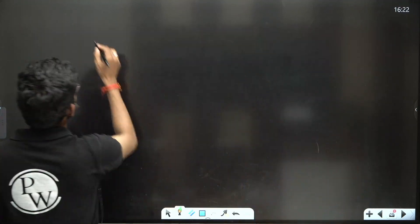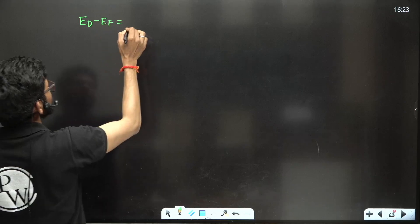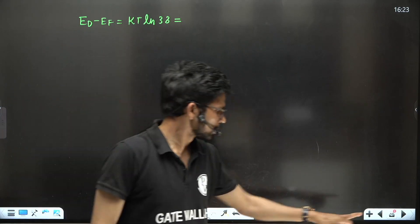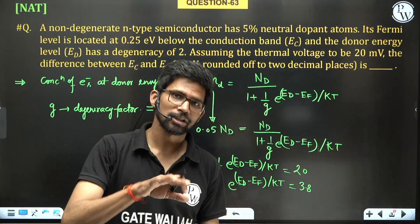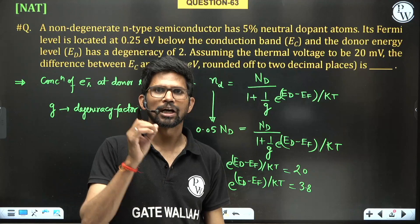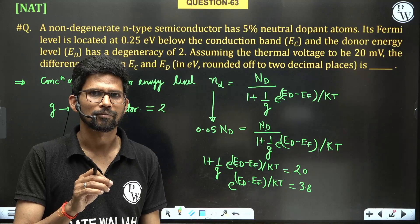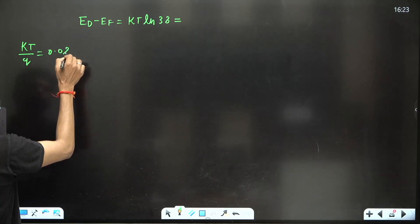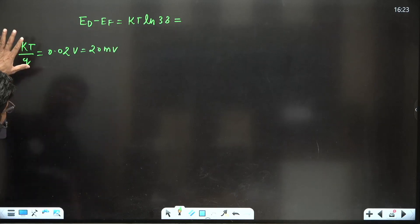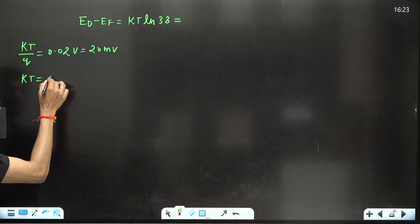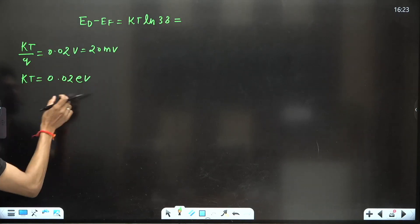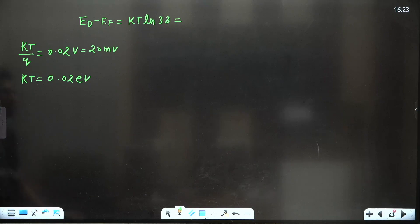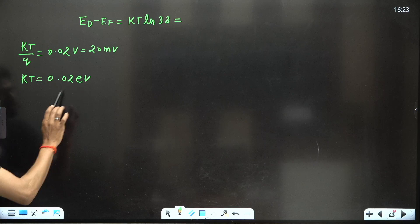If you want the answer in electron volt, KT should be in electron volt. The thermal voltage is 20 millivolt, which is 0.02 volt. If the thermal voltage is taken in volts, then KT will be in electron volt with the same magnitude — so KT equals 0.02 electron volt.